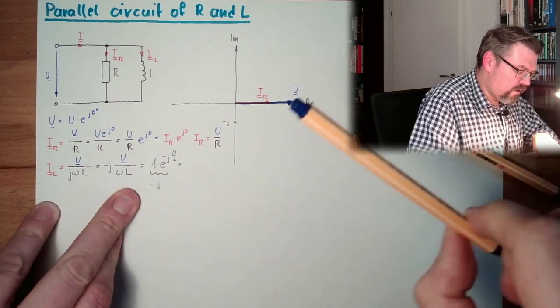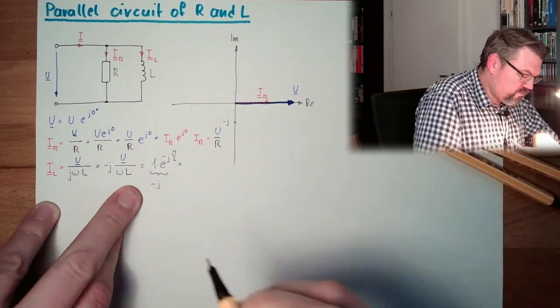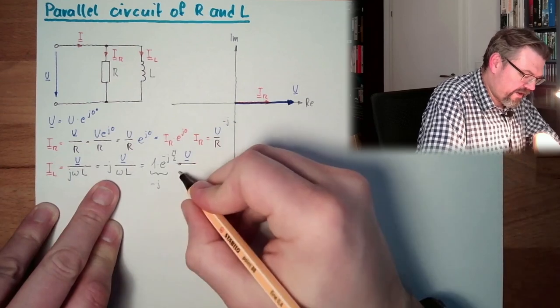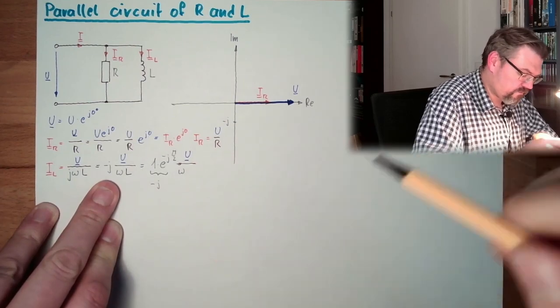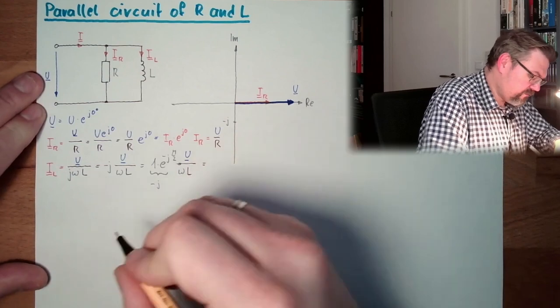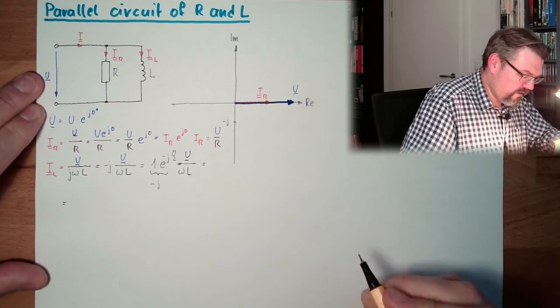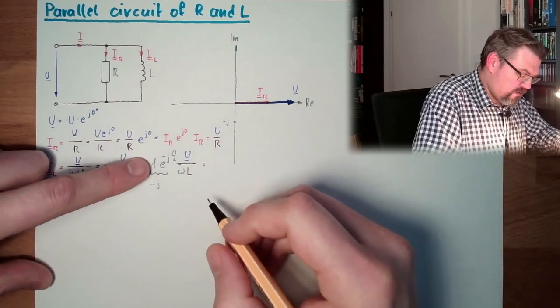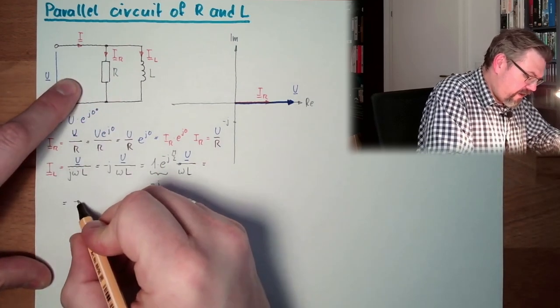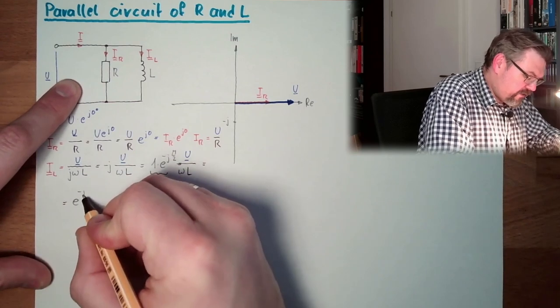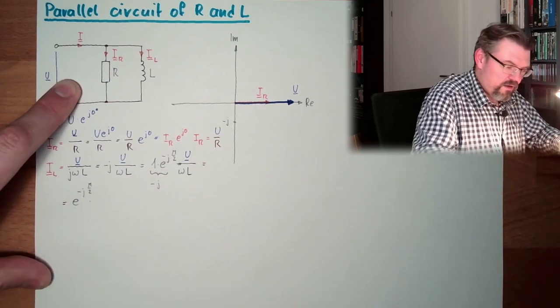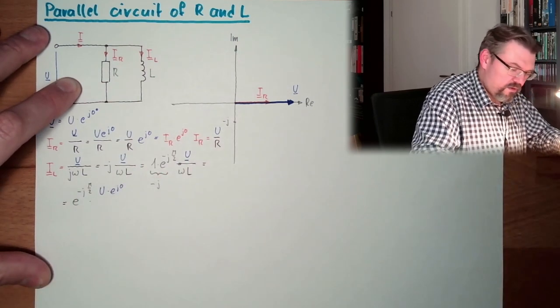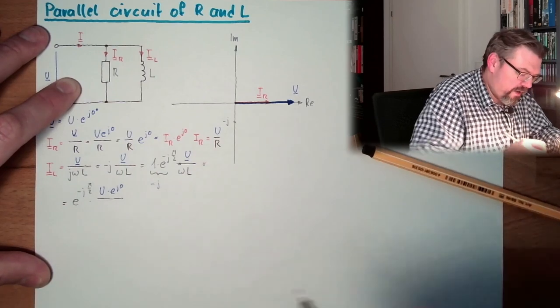This equals, I still have to, this is minus j, I still have to write those things. I don't know what this equals omega L. This equals, start here.